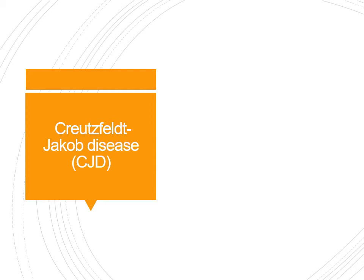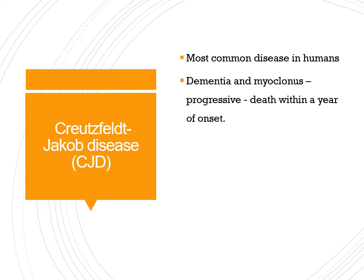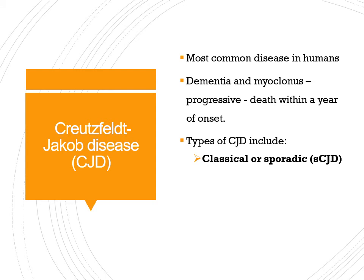Creutzfeldt-Jakob disease (CJD) is the most common prion disease in humans. Symptoms include dementia and myoclonus — progressive, occurring within a year of onset. Types of CJD: classical or sporadic — the majority of cases, where spontaneous misfolding of the prion protein occurs with no prior cause; and familial — approximately 15% of cases with hereditary history.